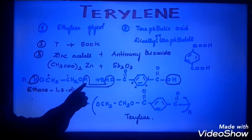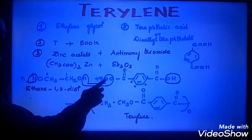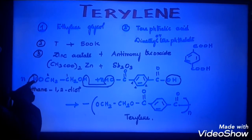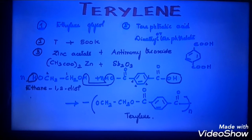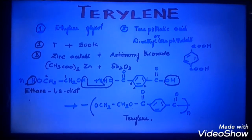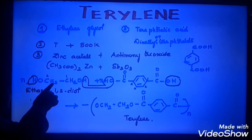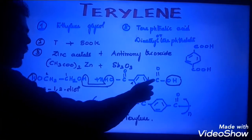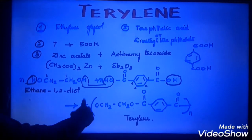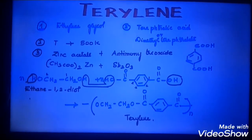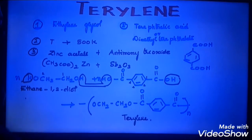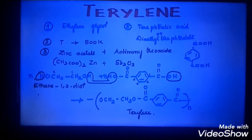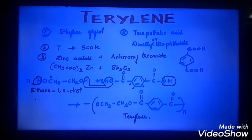Listen very carefully. This H and this OH come together to form a water molecule. Similarly, this H and this OH come together to form another water molecule. So what is remaining is: O–CH₂–CH₂–O–C(=O)–benzene–C(=O). That repeating unit is written in brackets with N, which is the repeating portion of Terylene, and along with that you get the water molecule.